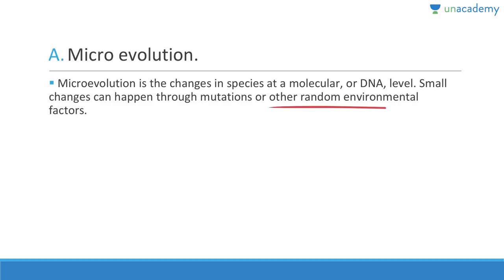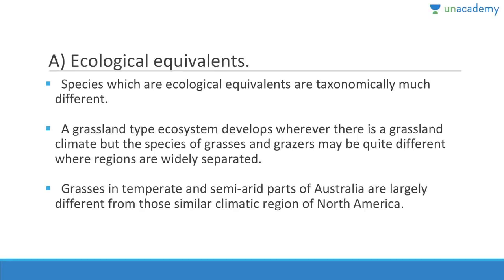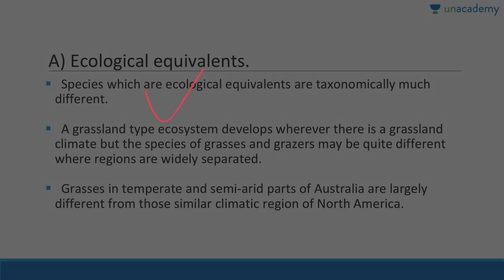Question 116: Organisms occupying the same ecological niche in different geographical regions are called ecological equivalents. Species which are ecological equivalents are taxonomically very different. A grassland ecosystem develops where there is a grassland climate, but the species of grasses and grazers may differ greatly between widely separated regions, such as Australia versus North America.